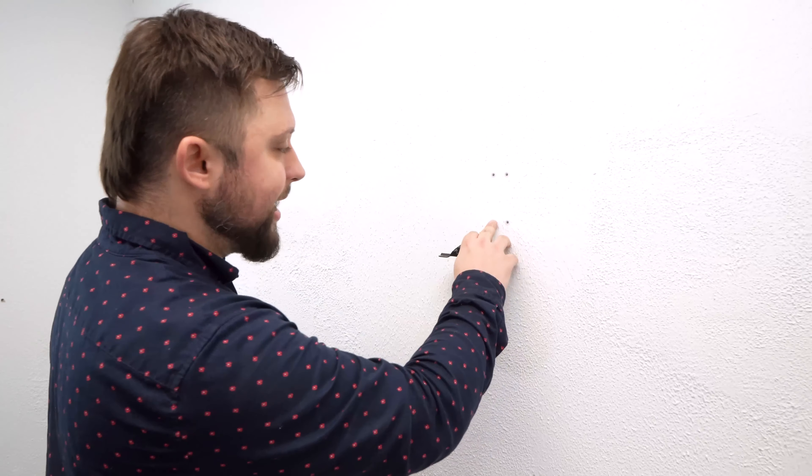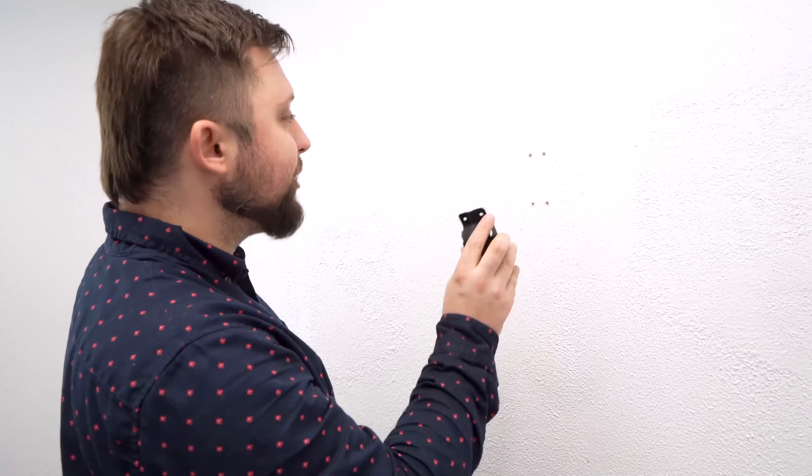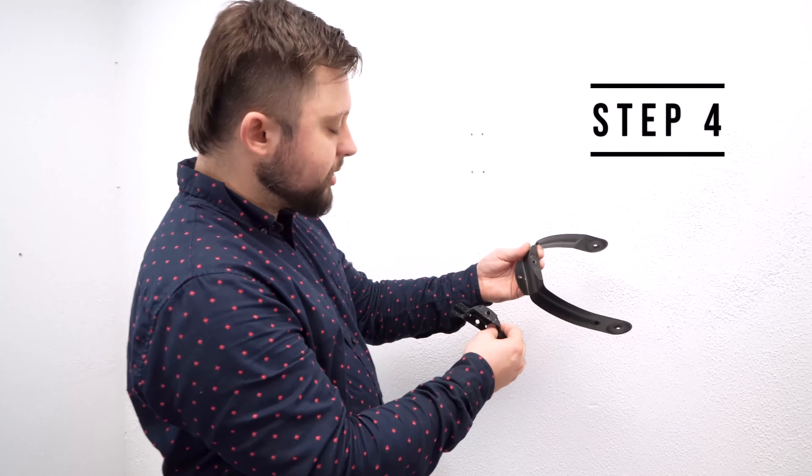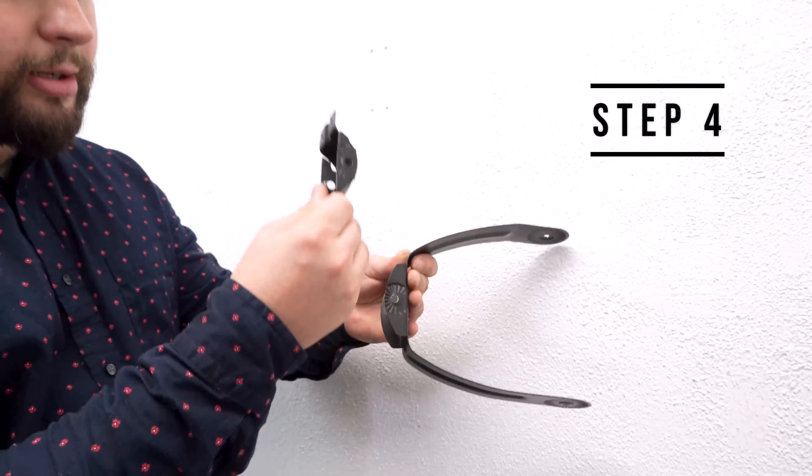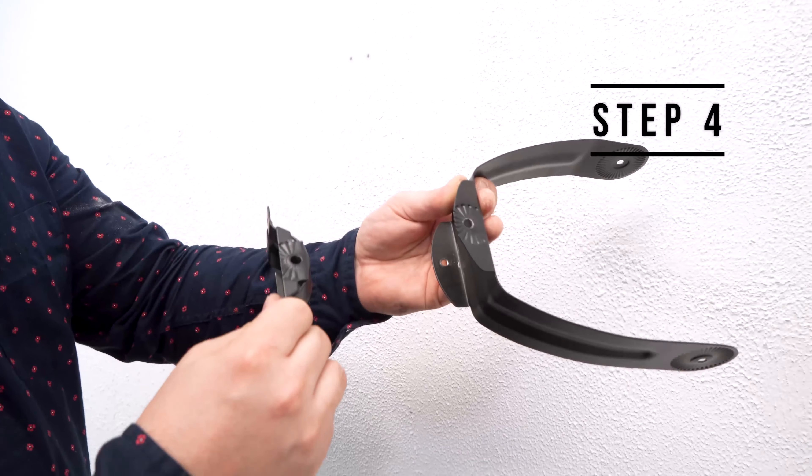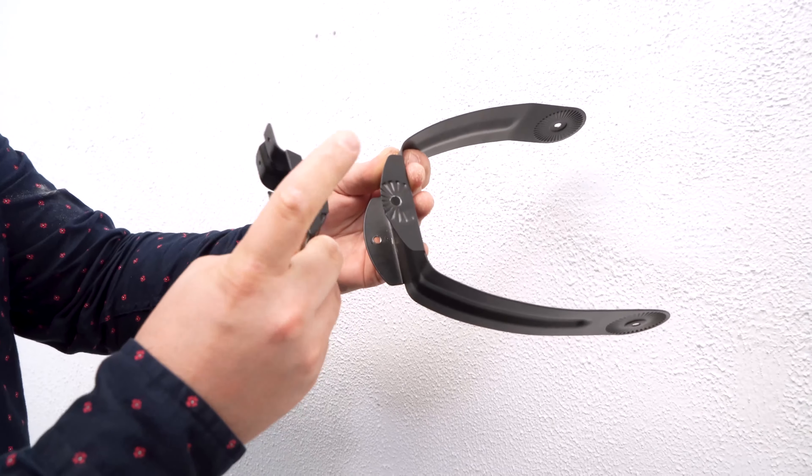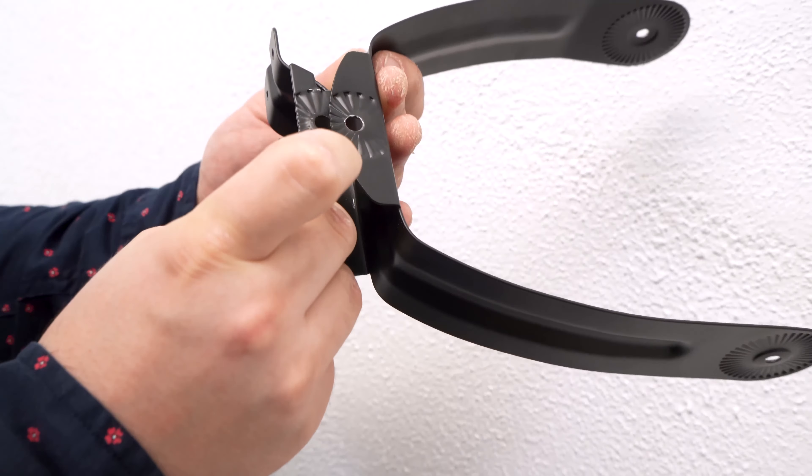Now that we have our anchors in place we're not going to mount the bracket yet. Step four is going to be sliding the wall bracket into the speaker bracket making sure that the stem sides are being together.